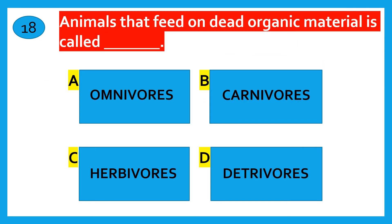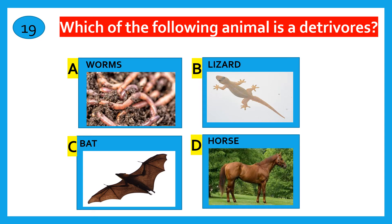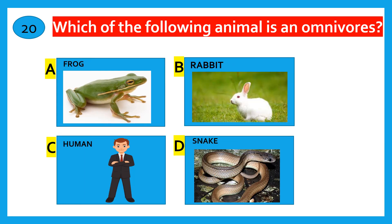Animals that feed on dead organic material are called — omnivores, carnivores, or herbivores? The correct answer is worms.